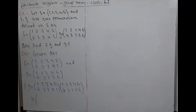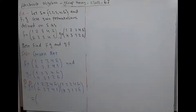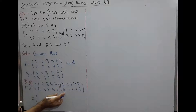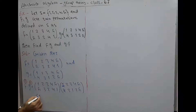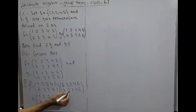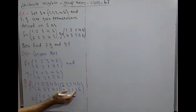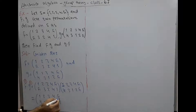We write the first elements 1, 2, 3, 4, 5. Image of 1 under f is 5, image of 5 under g is 4. Image of 2 under f is 3, image of 3 under g is 1. Image of 3 under f is 2, image of 2 under g is 3. Image of 4 under f is 4, image of 4 under g is 2. Image of 5 under f is 1, image of 1 under g is 5. So f∘g = (1 2 3 4 5 / 4 1 3 2 5).